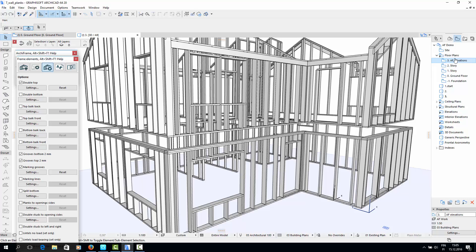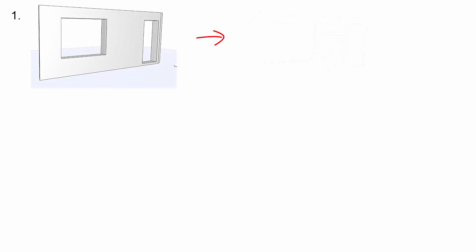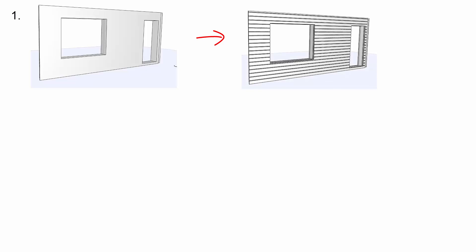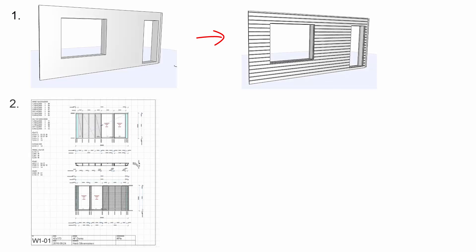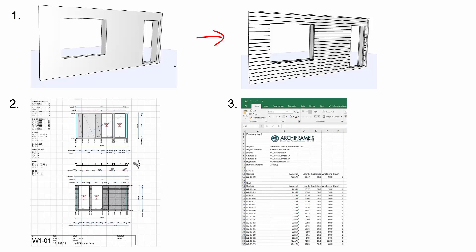In this video, I'll show you how to create planks for walls. While in the past two videos we've looked at creating wall elements, here we'll use those elements to create actual structures. We will also look at the elevation drawings of the walls, which are created automatically by Archiframe. Finally, at the end of the video, I'll show you how to use these drawings to make layouts and shop lists.